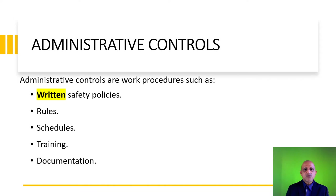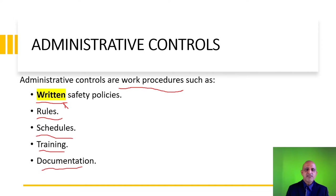Administrative controls are generally classified as work procedures, in the form of written safety policies — and I emphasize the word written, because everything must be documented. Documentation is critical because auditors will definitely want to look at your records. Administrative controls also comprise rules, schedules, training, and documentation.